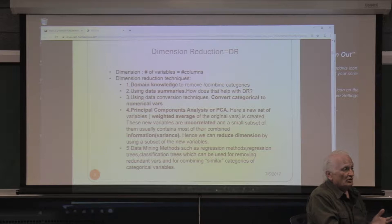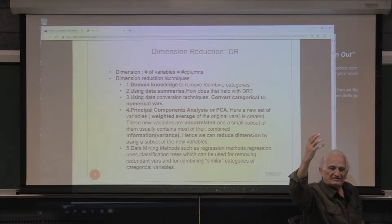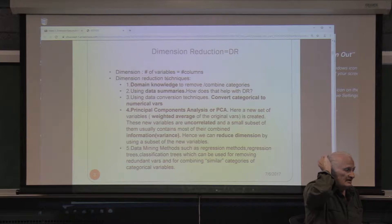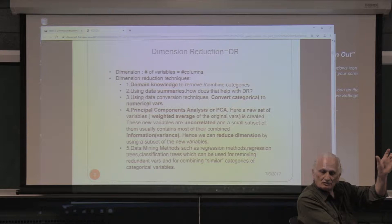If the column is salary, domain knowledge means knowing everything about that salary — its minimum, its maximum. If you get a raise, the raise cannot be more than 10%. Knowing everything about the column is part of domain knowledge, and it is very important. You can gain domain knowledge by doing summaries of columns, and by converting categorical to numerical variables — converting categorical to binary 0/1. These binary variables are called dummy variables or indicator variables.